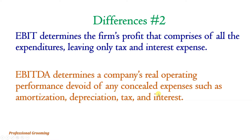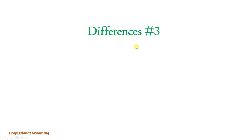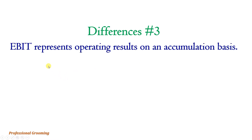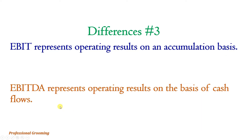EBITDA determines the company's real operating performance devoid of any concealed expenses such as amortization, depreciation, tax, and interest. So in EBITDA we are not including taxes, interest, amortization, and depreciation, whereas in EBIT we are only leaving out the tax and interest expense. Difference number three: EBIT represents operating results on an accrual basis, but EBITDA represents operating results on the basis of cash flows.